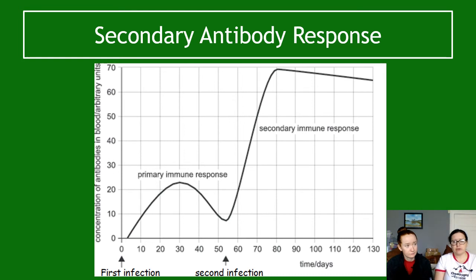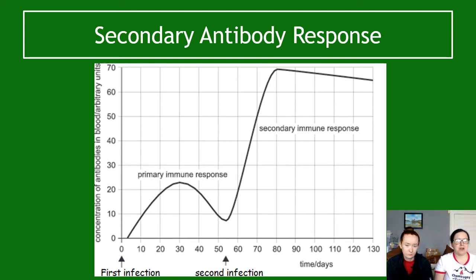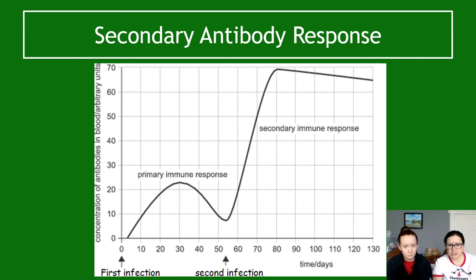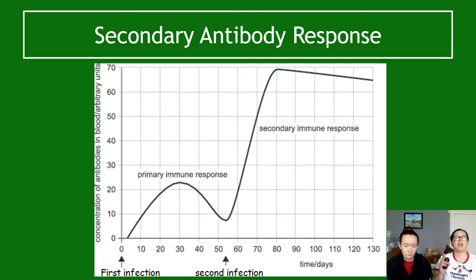On this graph — which you need to know the shape of — the primary immune response is the first time you're exposed to an infection. Antibody levels rise to about 23 over a period of 30 days. The second time you encounter that same infection, it takes about 25 days but antibody levels jump from about 8 to 70 — a larger and faster response. This is what memory cells allow for, and vaccination exploits this pattern: the needle is the primary response, real-world exposure is the secondary.